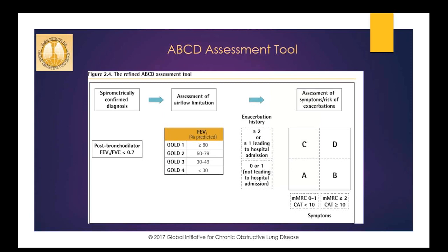GOLD continues to refine its ABCD grading system first introduced in 2011. The ABCD grading system considers both COPD symptoms along with exacerbation frequency and severity — A is better, D is worse. Probably the biggest change with the 2017 update is the separation of symptom evaluation from spirometry results. This separation was done because airflow limitation correlates less well with functional limitation and quality of life than patient-reported symptoms and exacerbation history.